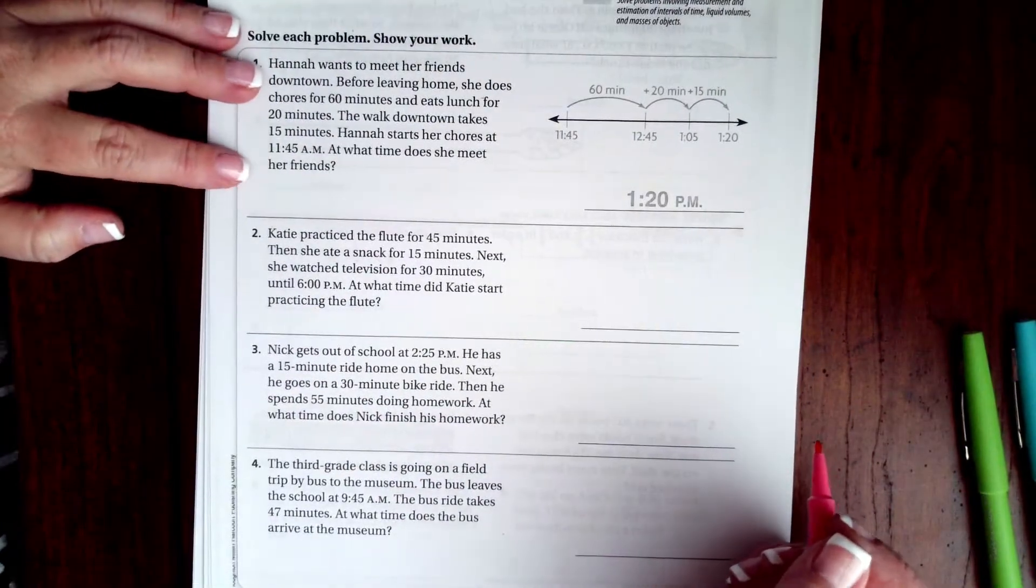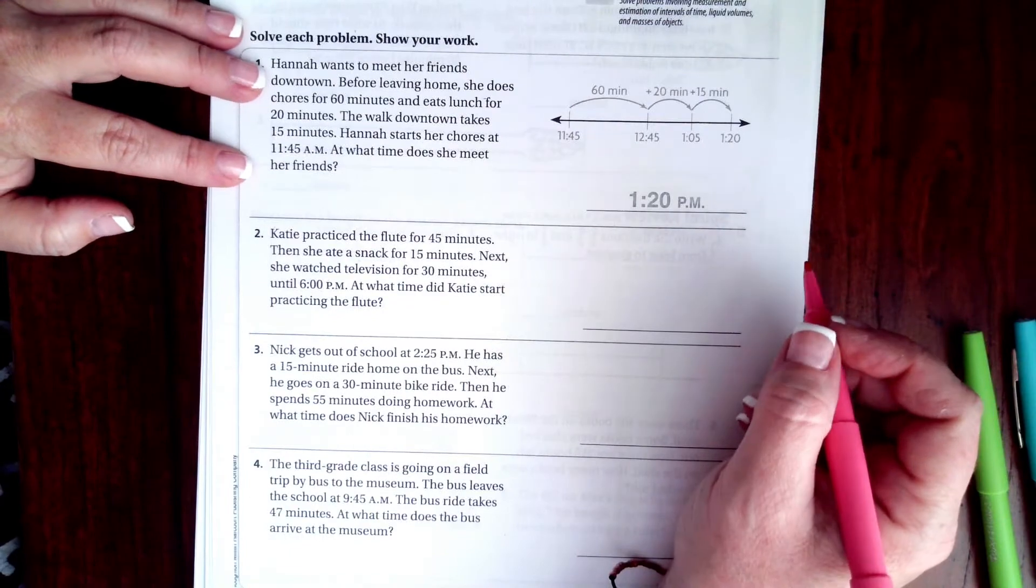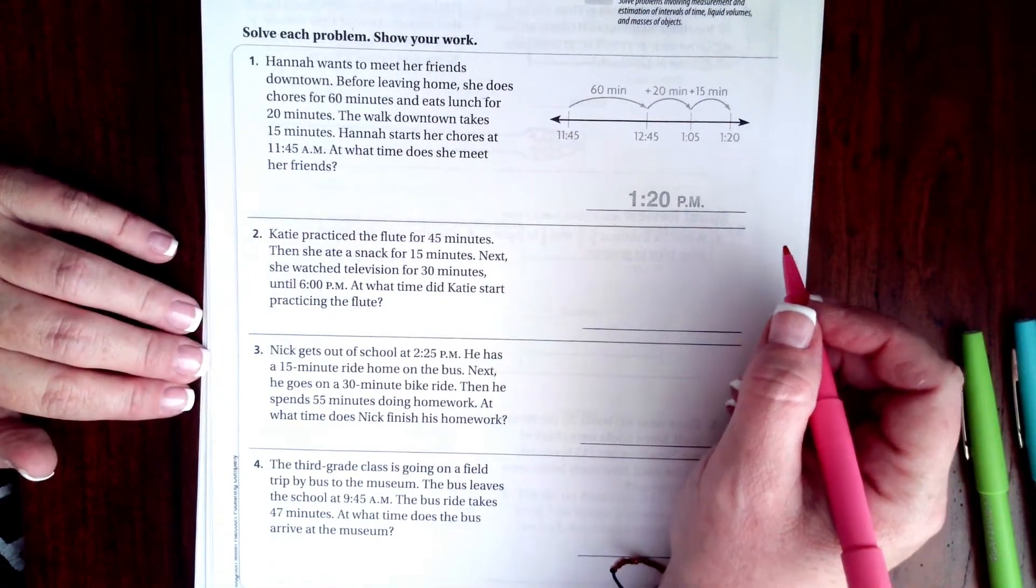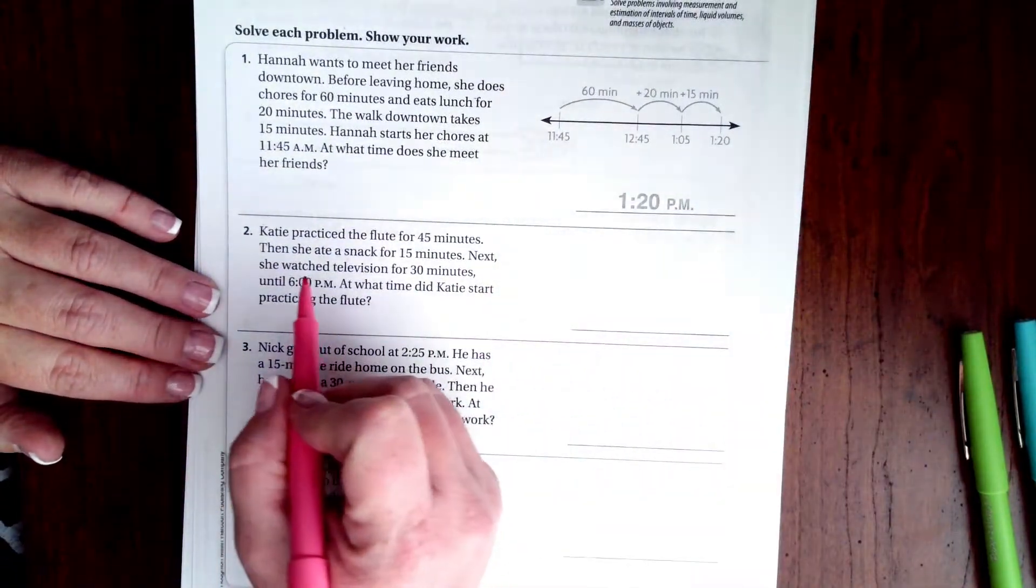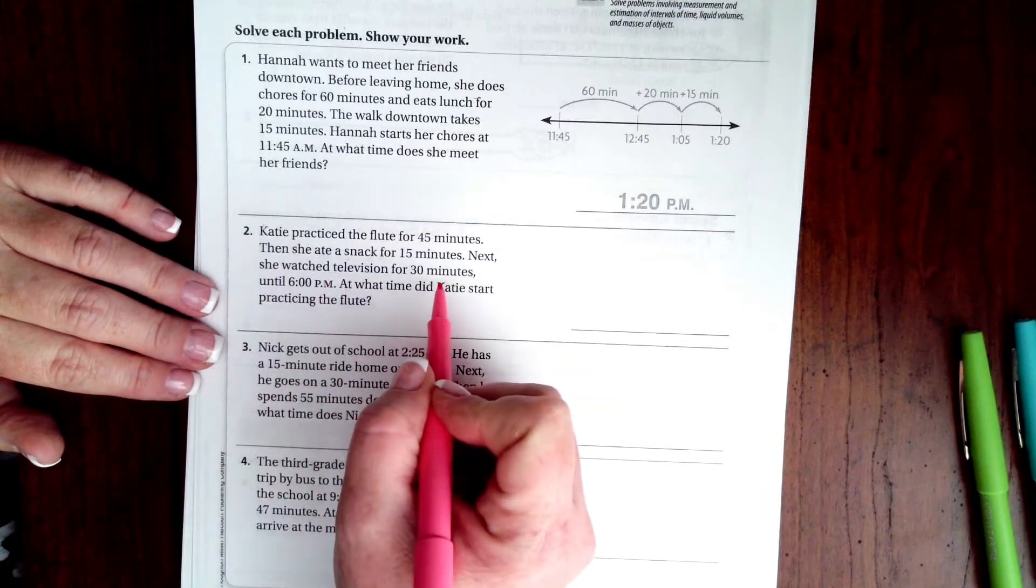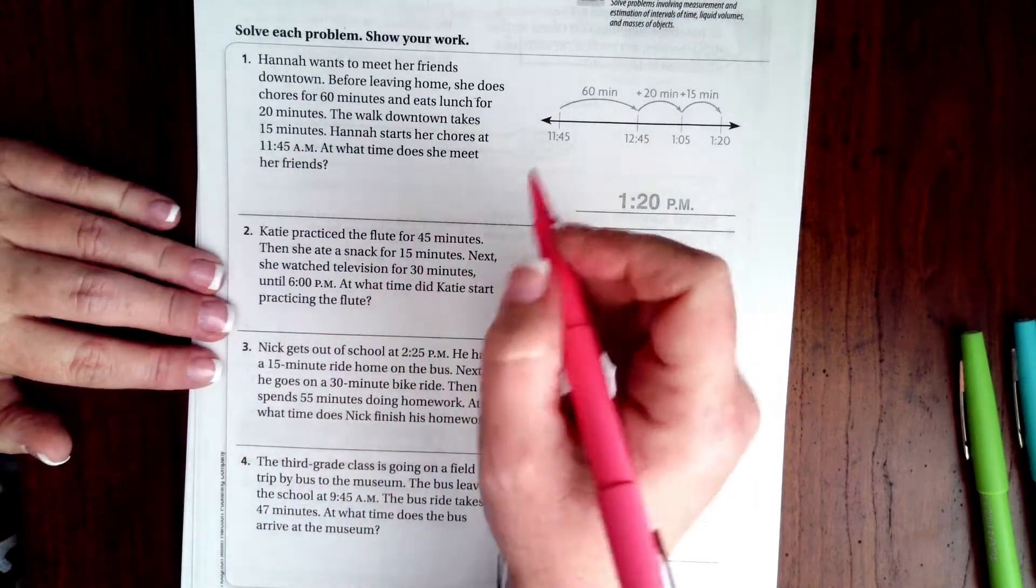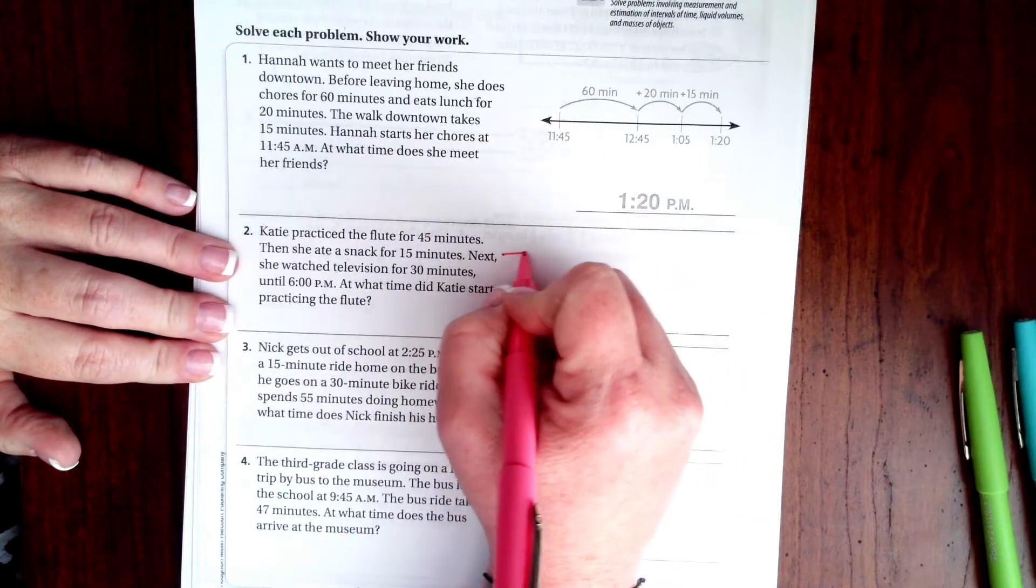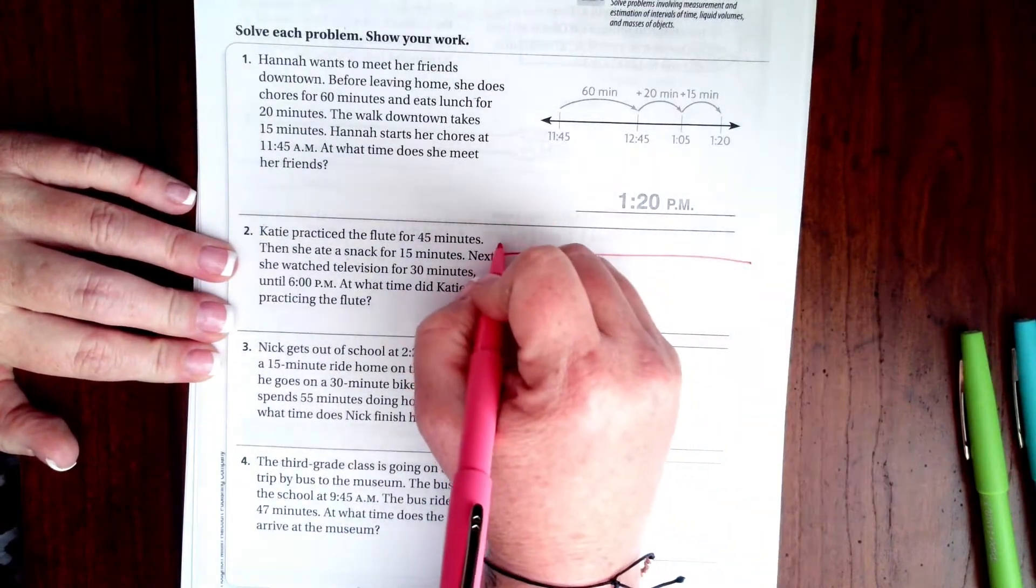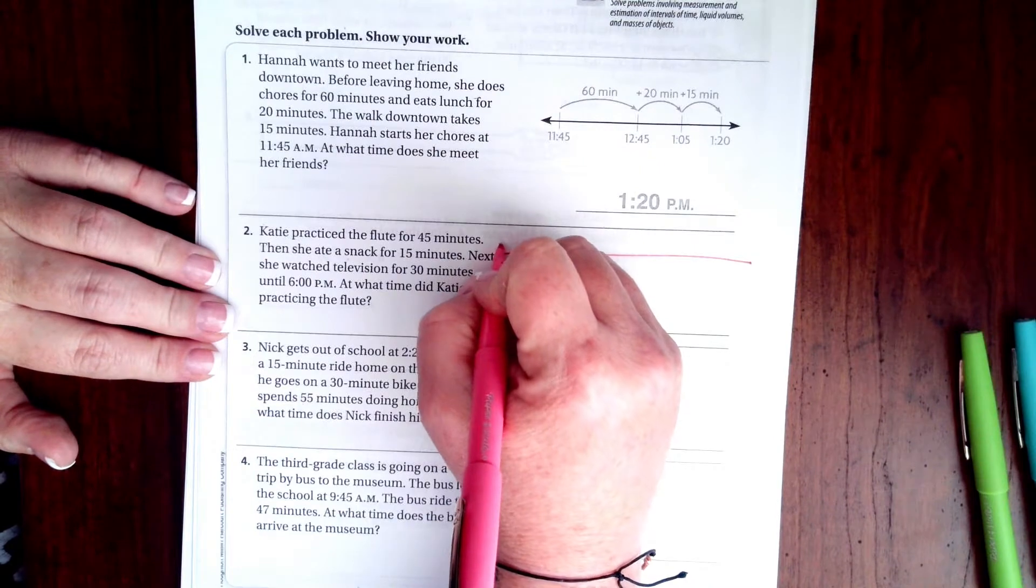Katie practiced the flute for 45 minutes, then she ate a snack for 15 minutes. Next, she watched television for 30 minutes until 6 PM. What time did Katie start practicing the flute? Let's go ahead and do our number line.